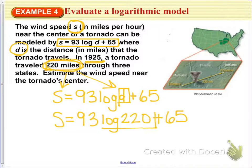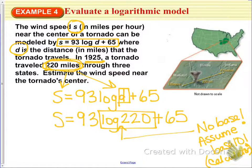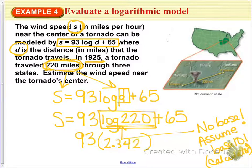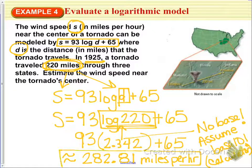As you notice, log 220 does not have a base — when there's no base, we assume it's base 10. Use your calculator to evaluate log of 220, which gives approximately 2.342. Then multiply by 93 and add 65, giving approximately 282.81 miles per hour for the wind speed near the center of this tornado.